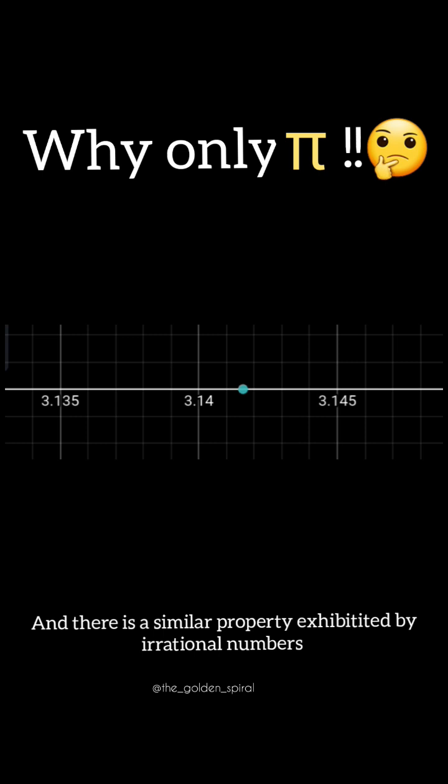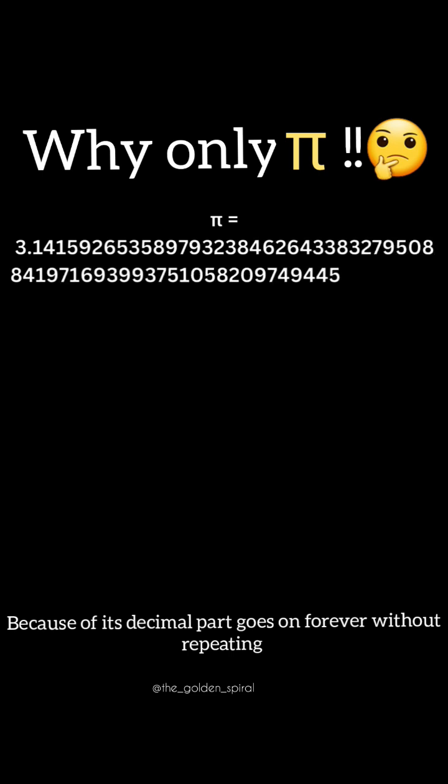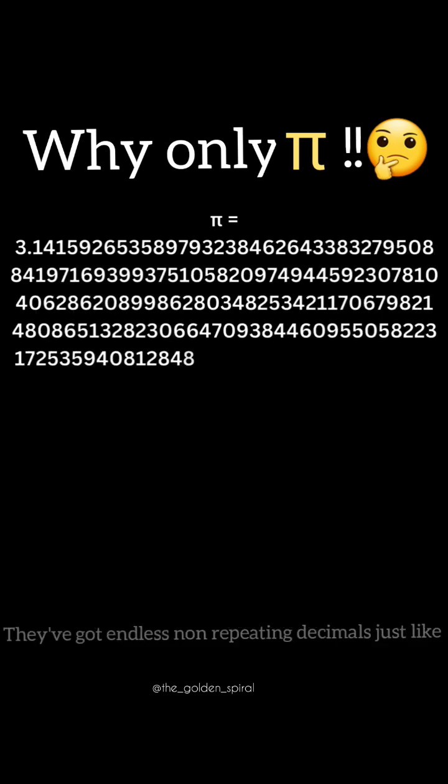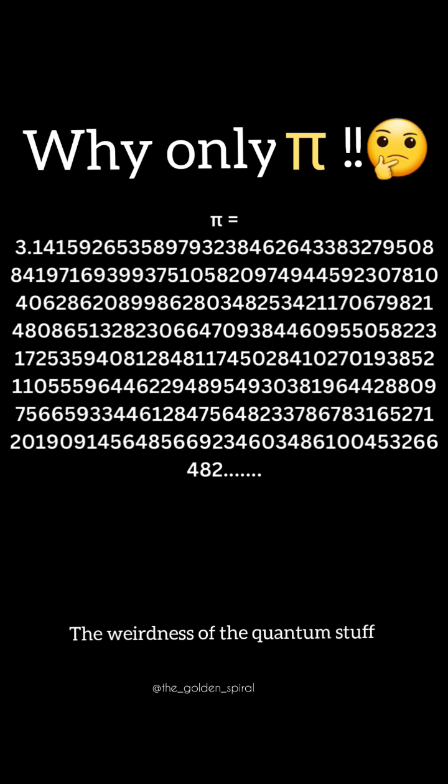And there is a similar property exhibited by irrational numbers. You cannot pinpoint the location of an irrational on the number line because its decimal part goes on forever without repeating. They have endless non-repeating decimals, just like the weirdness of quantum stuff.